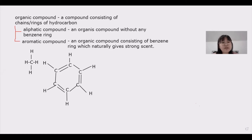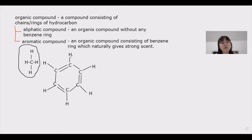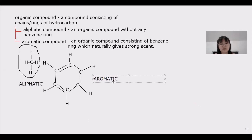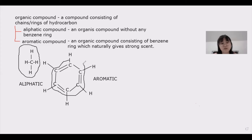This is an example of organic compound. The first one is an aliphatic compound because there is no benzene. And this is aromatic. Benzene is this one.